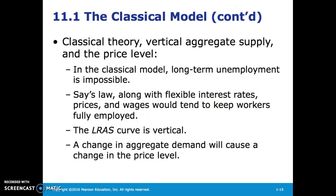The classical model suggests that long-term unemployment is impossible. Say's Law, as well as flexible interest rates, prices, and wages, would tend to keep workers fully employed, so the long-run aggregate supply curve is vertical.